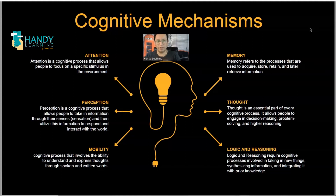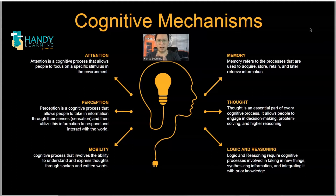If we talk about memory, memory is the ability that we have to store, retain and retrieve information that we have received, either in the short or in the long term. Then we have thought. Thought is an essential part of a cognitive process because it allows people to engage in decision making. It's all the concepts that we have as humans happening in our brain.